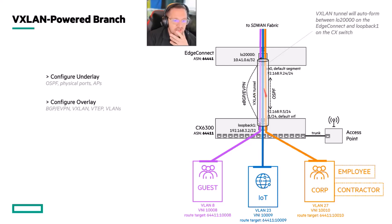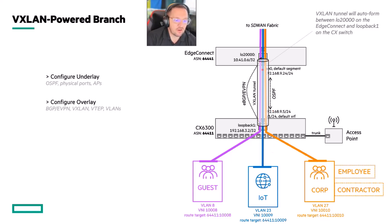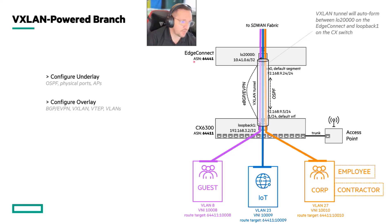The EdgeConnect itself doesn't know anything at all about VLAN 27, 23, or 8. These VLANs are downstream of the EdgeConnect — it never comes in contact with them. All it sees are VNIs and source addresses coming in and out of the VXLAN tunnel connected to the LAN side of the EdgeConnect. Only the LAN side — we do not support VXLAN on the WAN side.